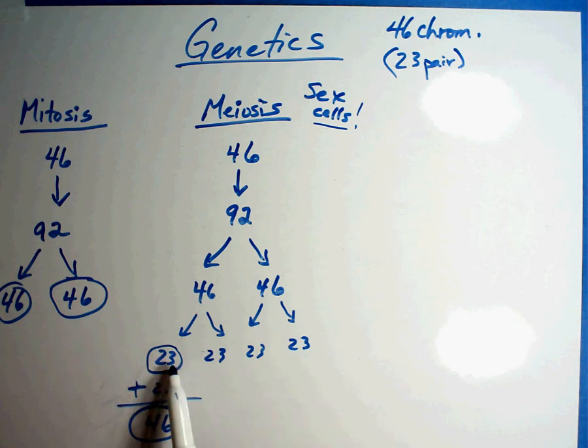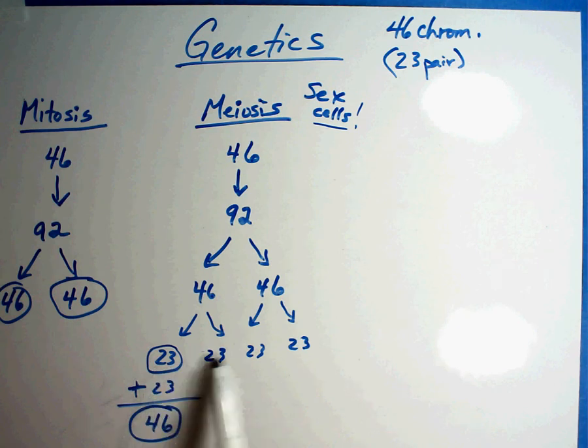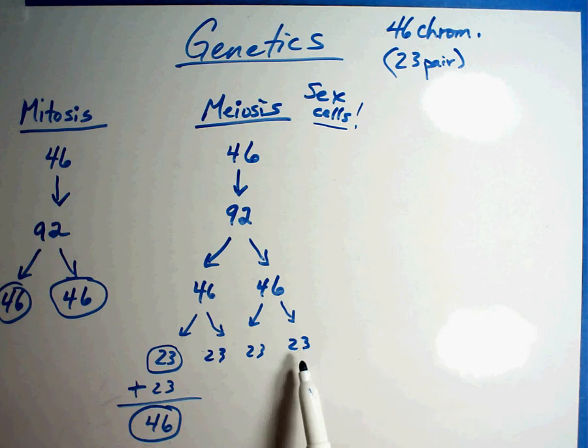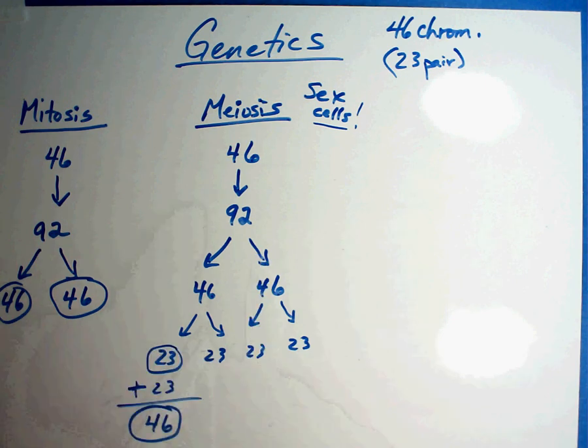So in a female, the difference is only one of the eggs will develop in that cycle. The others are all absorbed. In a male, they'll all have the ability to possibly fertilize the egg. And so this is the process of what is called meiosis.